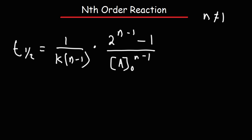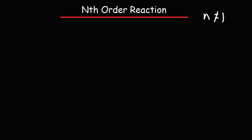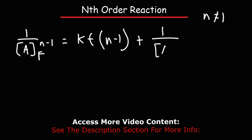Now let's talk about another formula — the integrated rate law formula for an nth-order reaction. Here it is: 1 over a_final raised to the (n minus 1) equals kt times (n minus 1) plus 1 over a_initial raised to the (n minus 1).